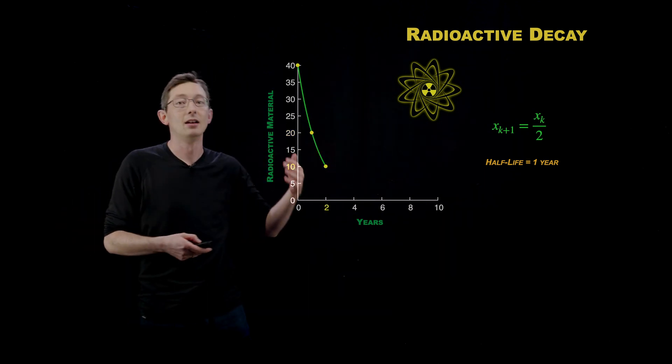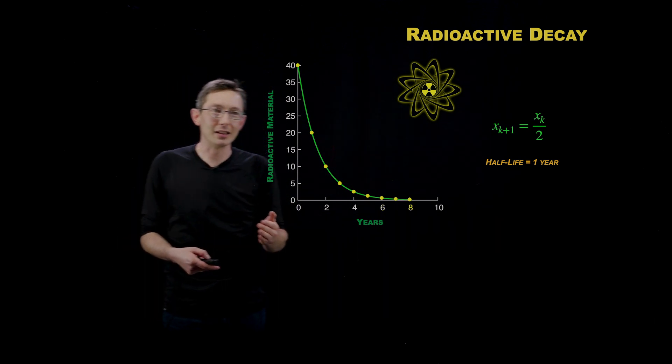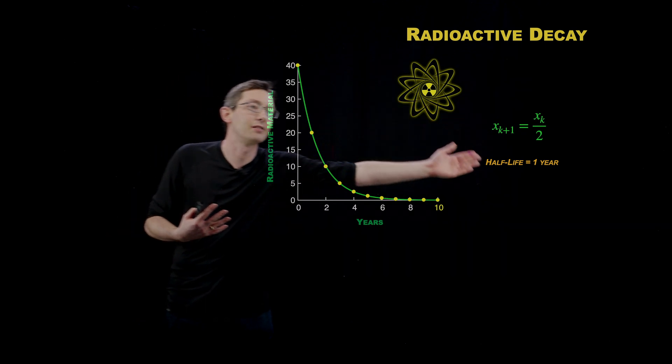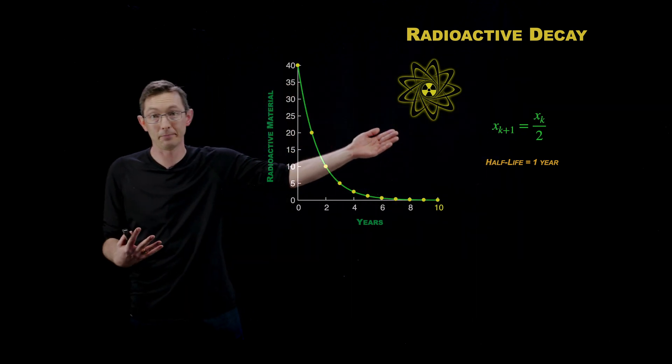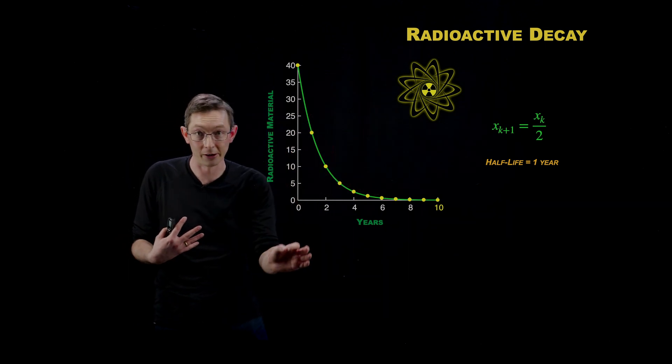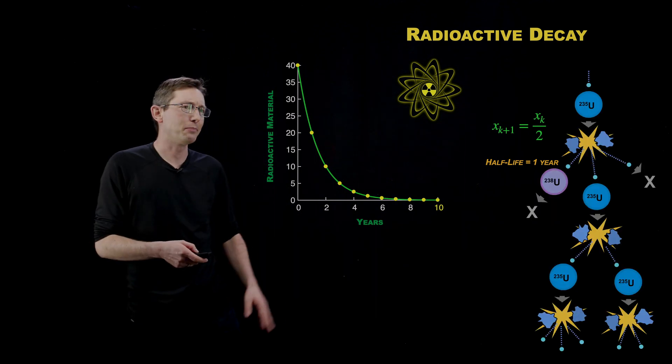The next year you'll have 10 and 5 and so on and so forth. And very rapidly you'll have a minuscule amount of this radioactive material just because of the power of exponential decay. So dividing by two a lot also gets you very, very small numbers. Just like multiplying by two got you really, really big numbers.